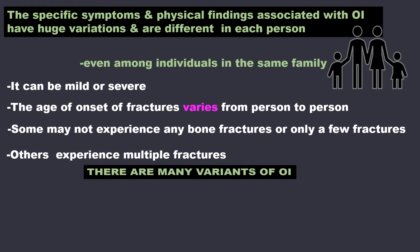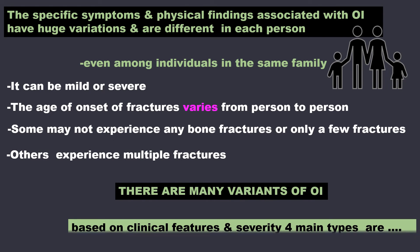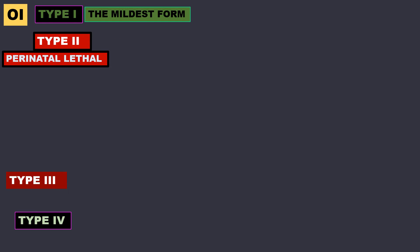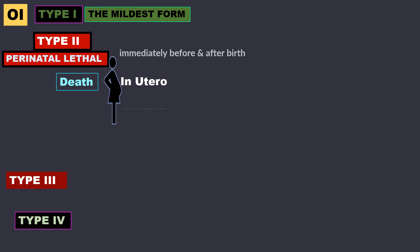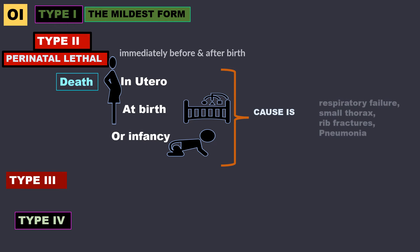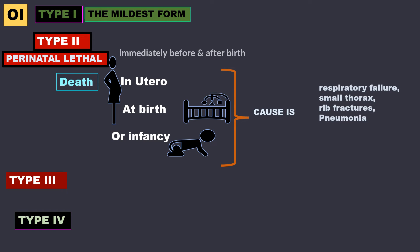There are many variants of OI. Based on clinical features and severity, four main types are recognized: Type 1, Type 2, Type 3, and Type 4. Type 1 is the mildest form. Type 2 is the perinatal lethal form — seen around the time of birth — and death can occur in utero, at birth, or in infancy due to respiratory failure, small thorax, rib fractures, and pneumonia, all assumed to be related to collagen abnormalities of lung tissue.